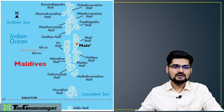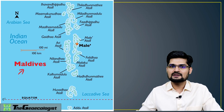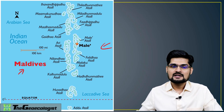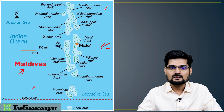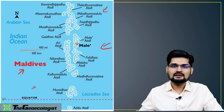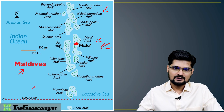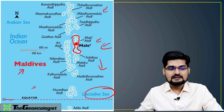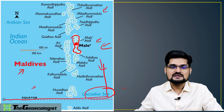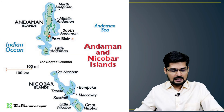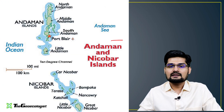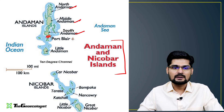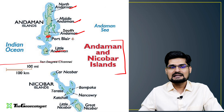Maldives, situated in the Indian Ocean south of India, is a collection of coral reef atolls. Male is the capital and largest atoll. The surrounding sea is called the Lakshadweep Sea, and being near the equator, Maldives lies in the equatorial region. Andaman and Nicobar Islands: from north — North Andaman, Middle Andaman, South Andaman — with Port Blair as capital. Little Andaman is separated by the Ten Degree Channel.